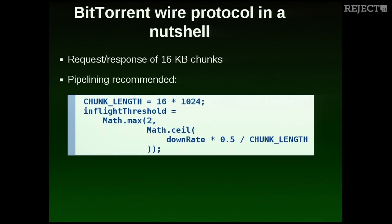The wire protocol is about requesting chunks of 16 kilobytes — this is not about transferring whole pieces at once, but always about 16 kilobytes. Because this is such a small piece of data, you need pipelining. My formula for this is based on a simple bandwidth-delay product over half a second with the current download rate. Why half a second? That's pretty much for today's internet connections. I need to have that download rate go up in the first place.